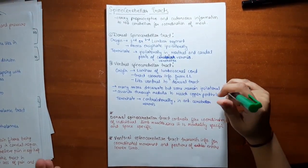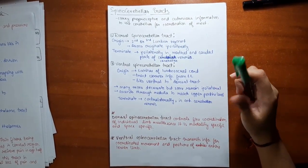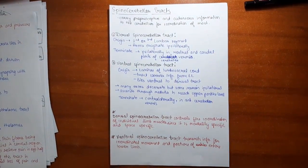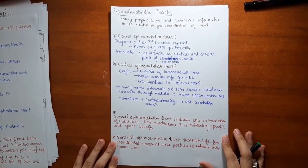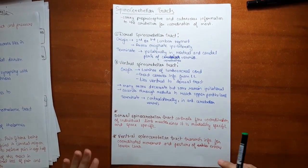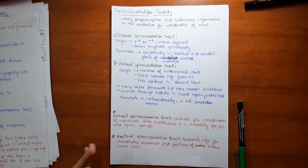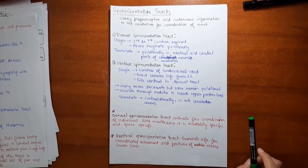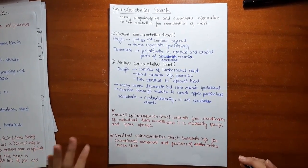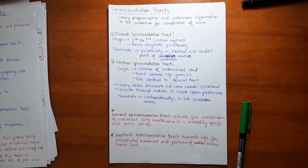The lateral tract is more related to major muscles, while the dorsal spinal cerebellar tract controls fine coordination of individual limb muscles. As much as the tract is centrally situated, it relates more to major muscles. The dorsal spinal cerebellar tract controls fine coordination of individual limb muscles, whereas the ventral spinal cerebellar tract transmits information for coordinated movement and posture of the entire lower limb, relating more to major muscles.